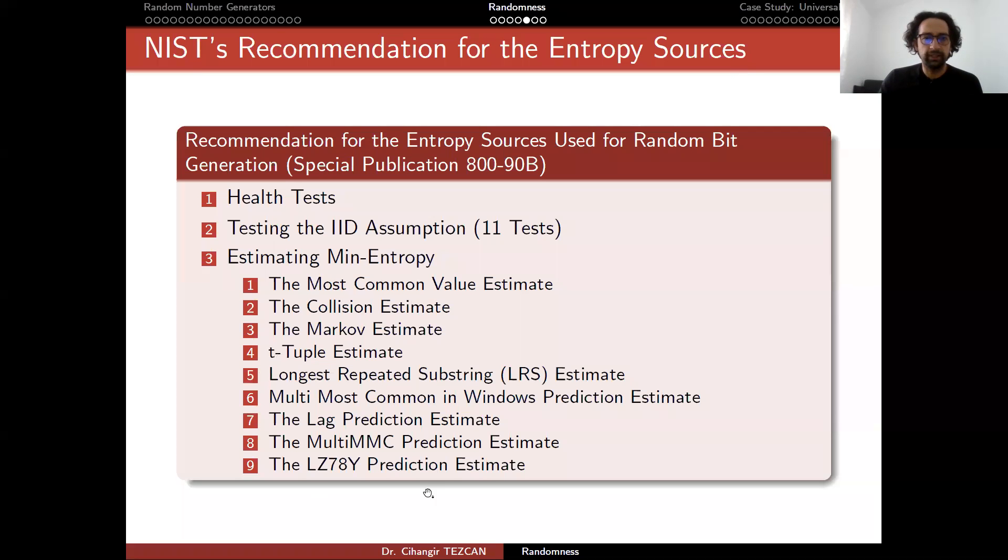All of these nine tests are explained in this NIST document. So all of them try to measure the entropy of the system and give you a number between zero and one. Then the minimum is assumed to be the entropy of this source. But I think the most recent version of this documentation was published two years ago. But just a few months later at FSC conference, it was shown that two of these tests actually were providing values smaller than the real value.